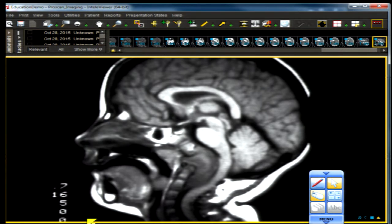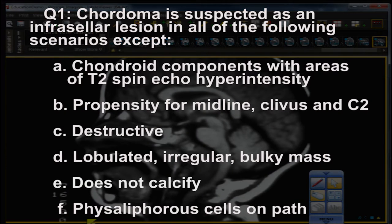Question number one: Chordoma is suspected as an infracalvar lesion in all of the following scenarios EXCEPT — A: chondroid components with areas of T2 spin-echo hyperintensity; B: propensity for the midline clivus and C2; C: destructive; D: lobulated irregular bulky mass; E: does not calcify; F: physaliferous cells on pathology.